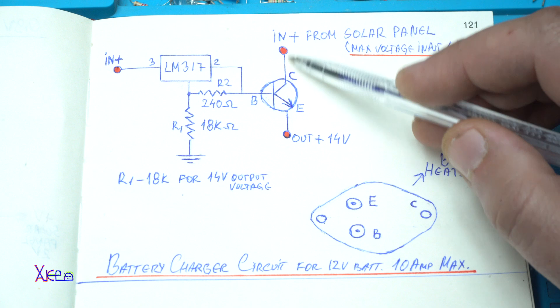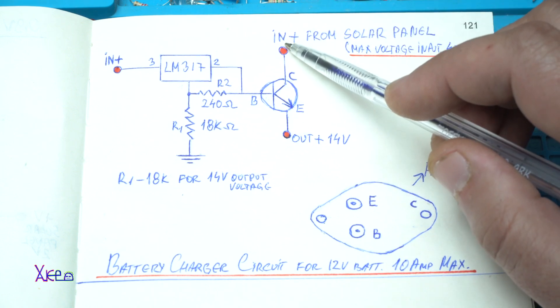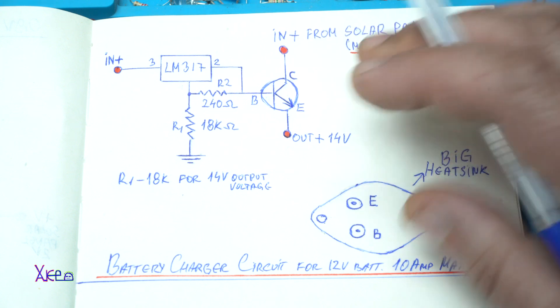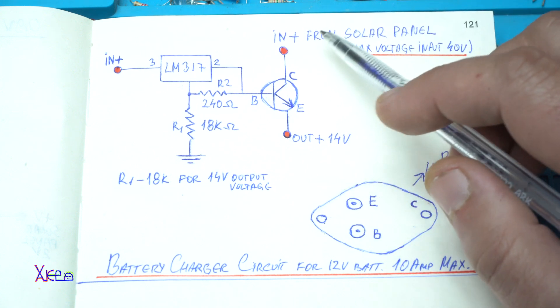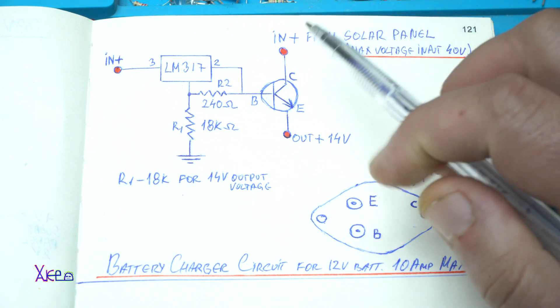On the collector of the 2N3055 there is input voltage. In my case I am having input voltage from the solar panel. Remember that the maximum voltage is 40 volts.